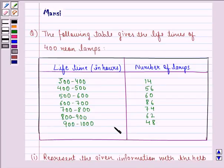Hello and welcome to the session. My name is Mansi and I'm going to help you with the following question. The question says the following table gives the lifetimes of 400 neon lamps. In this column we have lifetime in hours and in this column we have number of lamps.